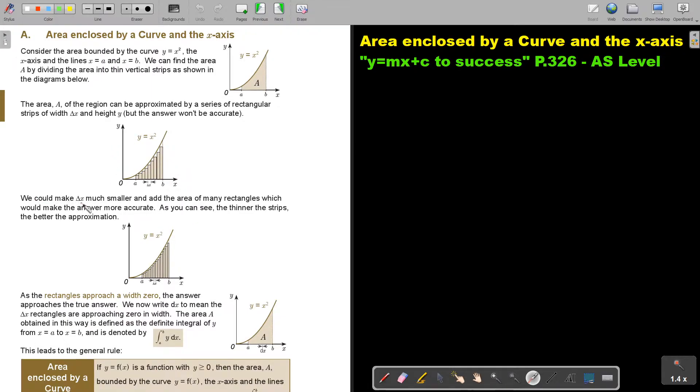We could make delta x much smaller and add the area of many rectangles, which will make the answer more accurate. As you can see, the thinner the strips, the better the approximation. If you make the strips thinner, you will see the spaces will be less, and that will bring it closer to the real area.